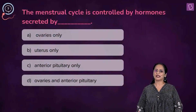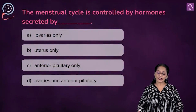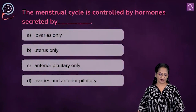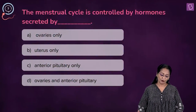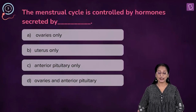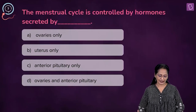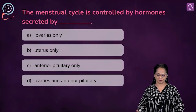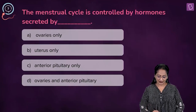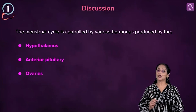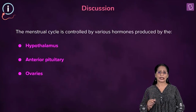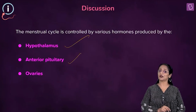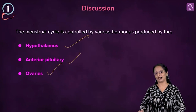A fill-in-the-blanks question for you. The menstrual cycle is controlled by hormones secreted by: A — ovaries only, B — uterus only, C — anterior pituitary only, D — ovaries and anterior pituitary. The menstrual cycle is controlled by various hormones secreted by the hypothalamus, the anterior pituitary gland, and the ovaries.